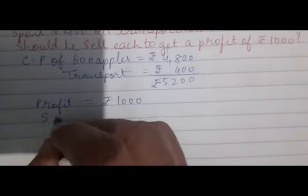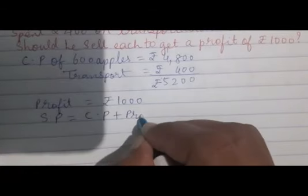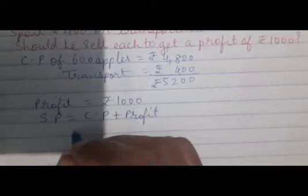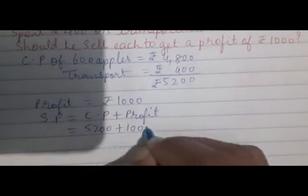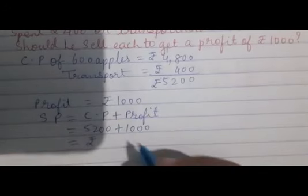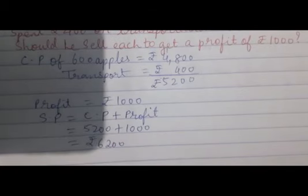That means we have to find the selling price. So selling price equals cost price plus profit. That is 5,200 plus 1,000. So total selling price is 6,200 rupees.